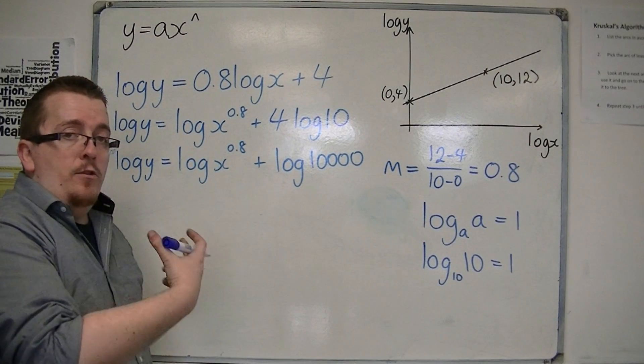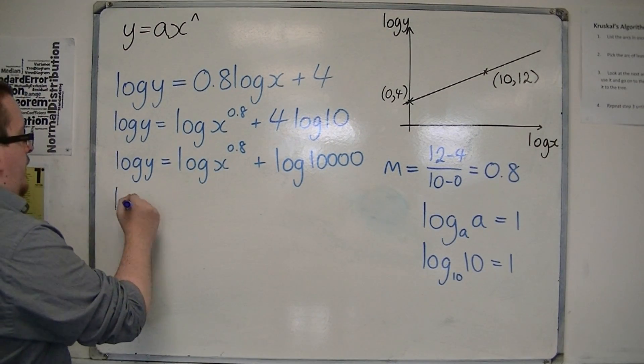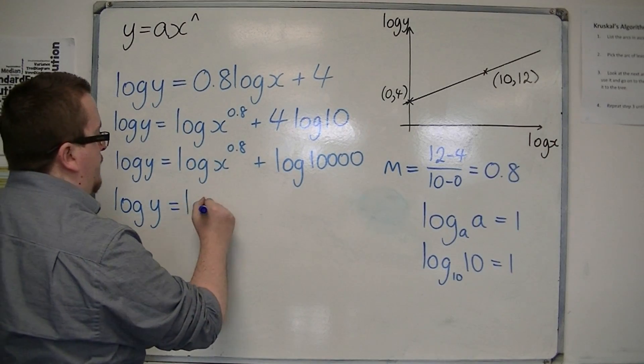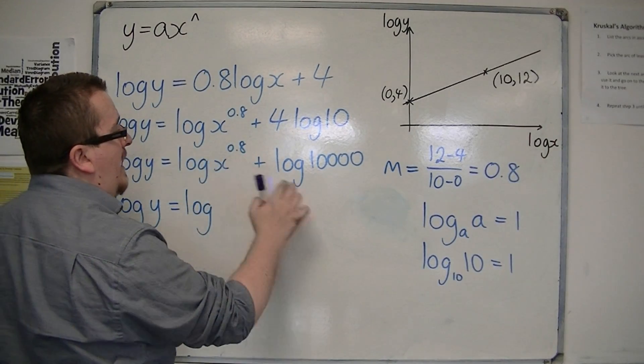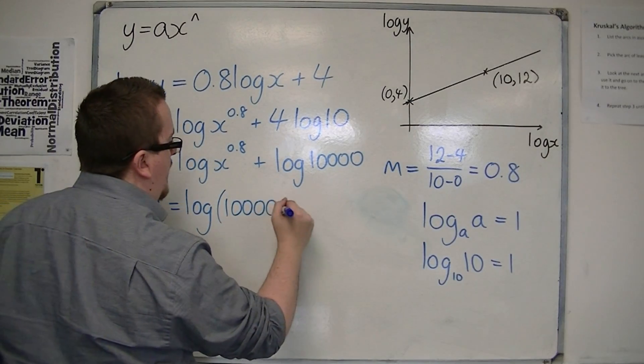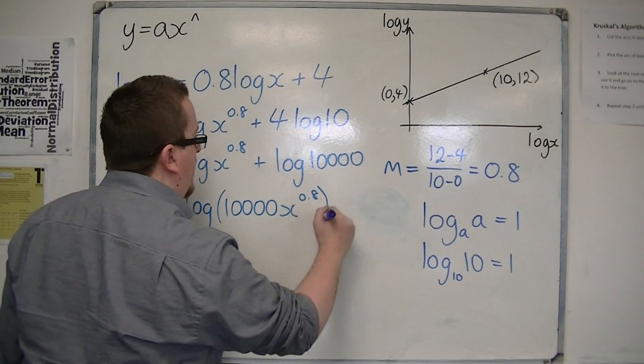These two logarithms can now be combined, and I can say that's log of y equals log of x to the 0.8 times 10,000. So, log of 10,000 x to the 0.8.